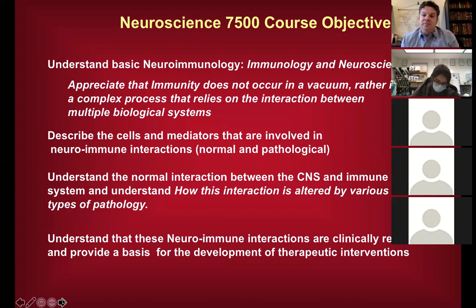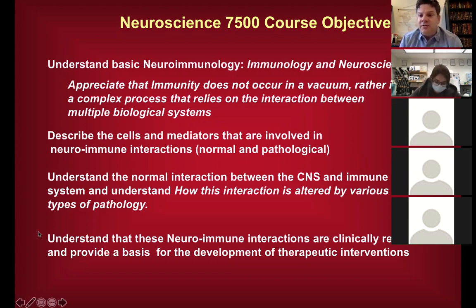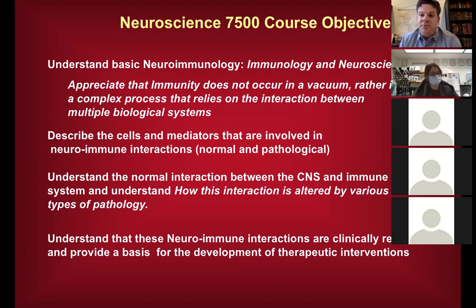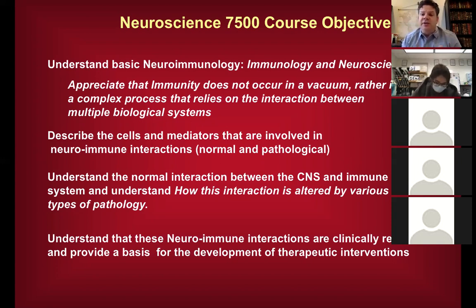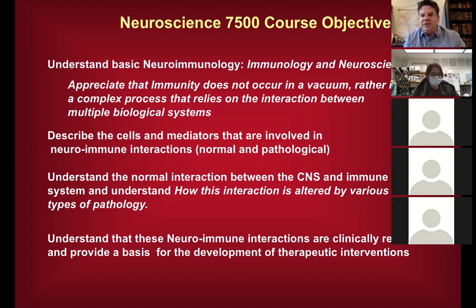A lot of times when we see pathology or disease, it's the result of — or exacerbated by — a disconnect between these two systems. Tackling complex medical issues, whether it's cancers, neurodegenerative disease, or autoimmune disease, really does require looking at things in at least two dimensions. It's important to look at the clinical value of neuroimmunology, which is what the applied part is for. Hopefully you'll develop interest in that part and see how it leads to interventions and therapies.